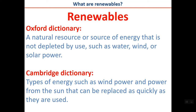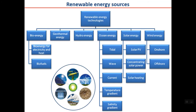What are renewables? Based on the Oxford Dictionary, a renewable is a natural resource or source of energy that is not depleted by use — meaning it will not be finished as you use it, such as the energy in water, wind, or solar. According to the Cambridge Dictionary, these are types of energy such as wind and sun that can be replaced as quickly as they are used.